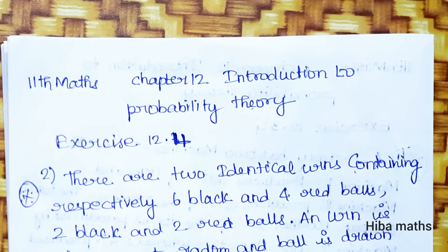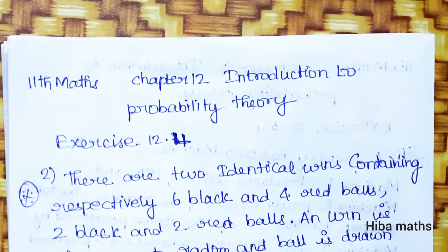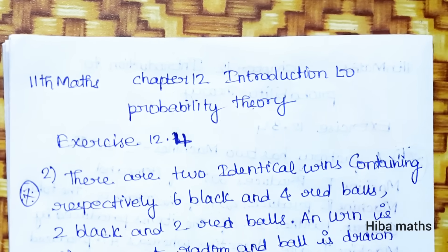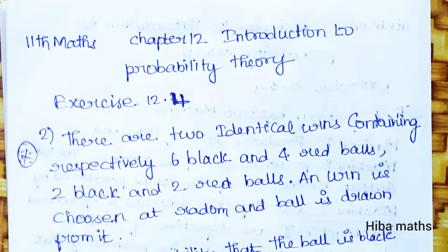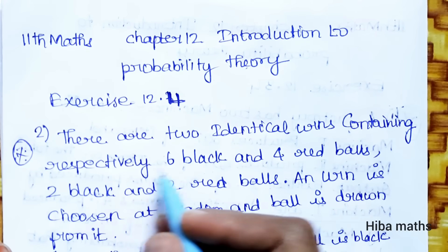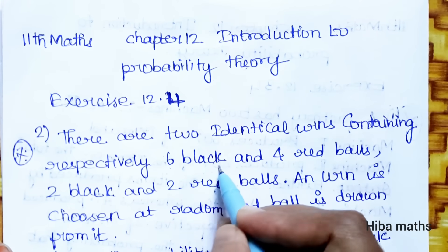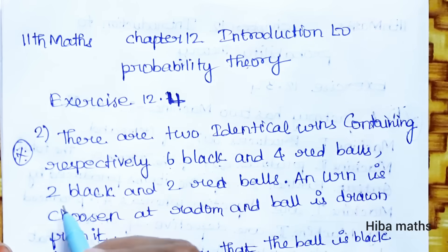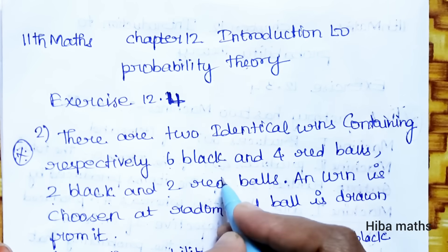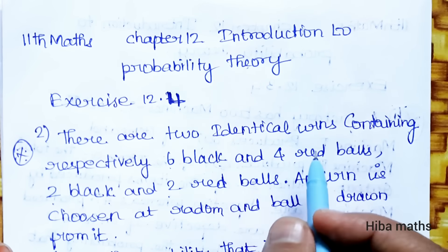Hello students, welcome to Hiba Max 11 Standard, Chapter 12 Introduction to Probability Theory, Exercise 12.4, Second Question. There are two identical urns containing respectively six black and four red balls, and two black and two red balls.